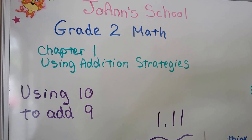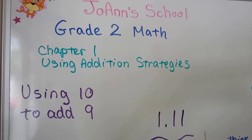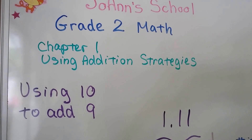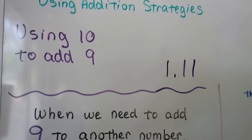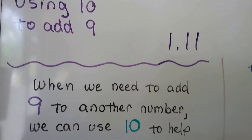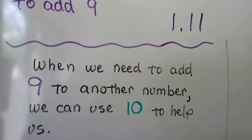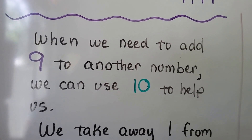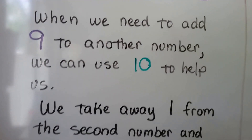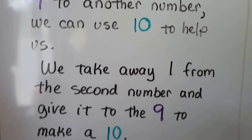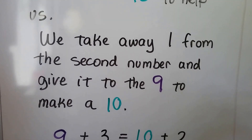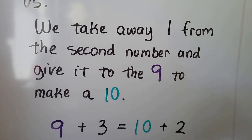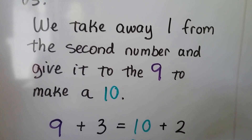Lesson 1.11: Using 10 to add 9. When we need to add 9 to another number, we can use 10 to help us. We take away 1 from the second number and give it to the 9 to make it a 10.